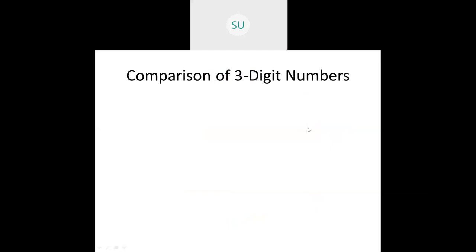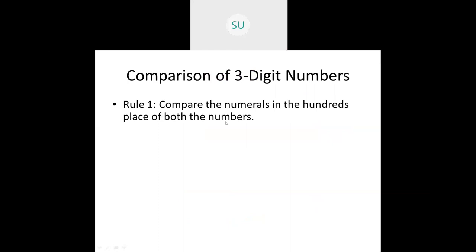Now let's see how to compare three digit numbers. Rule 1: compare the numerals in the hundreds place of both numbers. In the example 642 and 462, the hundreds place of the first number is 6 and the second is 4. Since 6 is greater than 4, it means 642 is greater than 462.